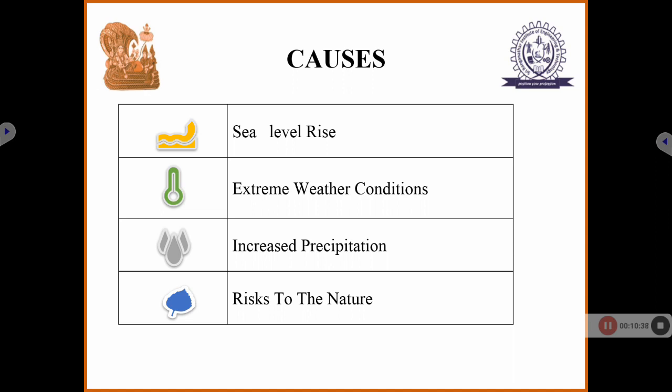Effects of climate change include rising sea levels — when it is very hot, glaciers and icebergs melt, increasing sea levels and leading to tsunamis and floods. Extreme weather conditions affect human health through skin rashes and sunburns. Increased precipitation results in huge amounts of rainfall, leading to floods and tsunamis. There is also risk to nature — deforestation takes place for constructing roads, buildings, and converting agricultural land into plots and apartments.